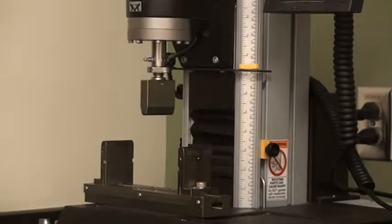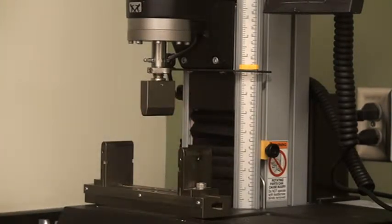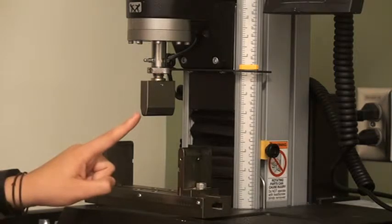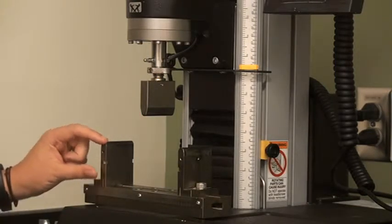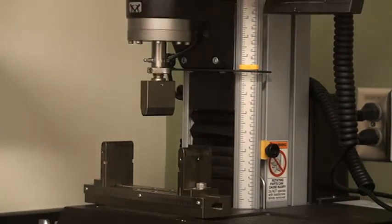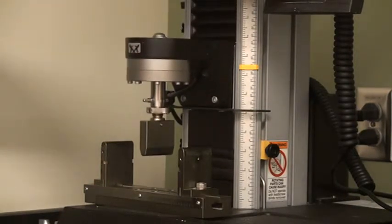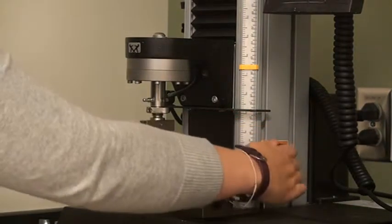Before testing, make sure you set your safety stops. The lower one should be set so that it prevents the assemblies from making contact with one another. Slowly jog the actuator down until the tip of the upper anvil is about halfway between the tips of the lower anvils and the base plate. Move the safety stop up so that it will trip at this point.